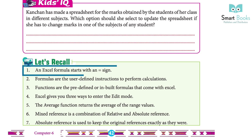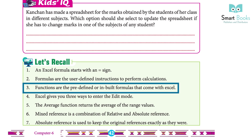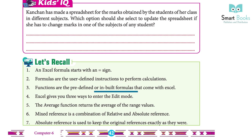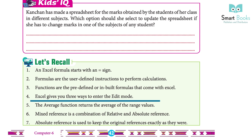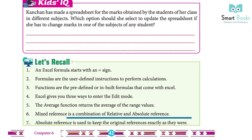Let's recall: 1 — an Excel formula starts with an equal sign. 2 — formulas are user-defined instructions to perform calculations. 3 — functions are predefined or inbuilt formulas that come with Excel. 4 — Excel gives three ways to enter edit mode. 5 — the AVERAGE function returns the average of the range values. 6 — mixed reference is a combination of relative and absolute reference. 7 — absolute reference is used to keep the original reference exactly as it was.